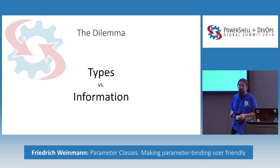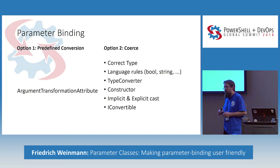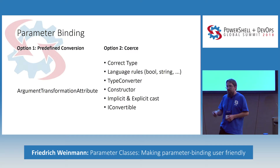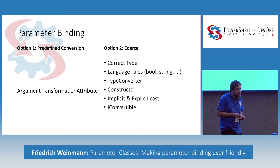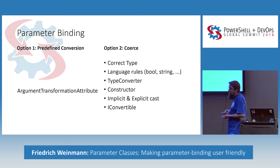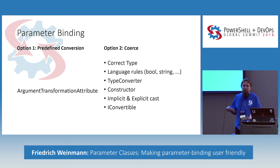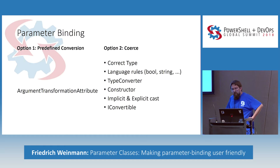Specifically, there are two options. Option one: somebody has an argument transformation attribute attached to the parameter — basically a conversion path. It will walk exactly that path, and either it will work or it will fail. On the other hand, if you don't have that, it will try to fit the bits together. If it's already the correct type, that's easy. If the expected type is one of the core language features like string or bool, there are some custom rules PowerShell respects, making that a fairly fast and efficient option.